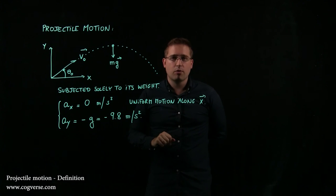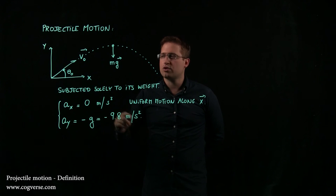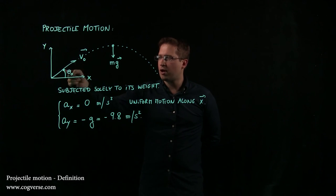So we have non-uniform motion in the y direction and the combination of these two motions gives you that parabolic curve here.